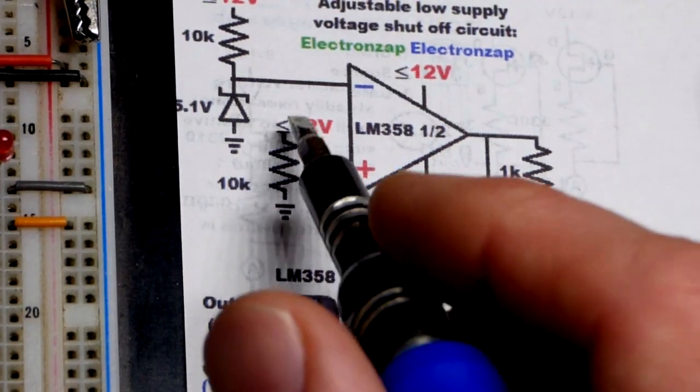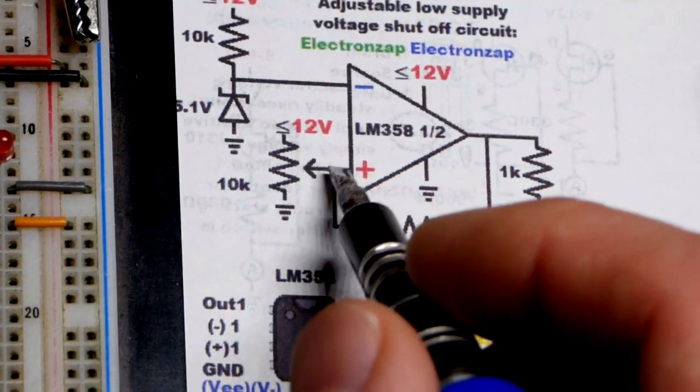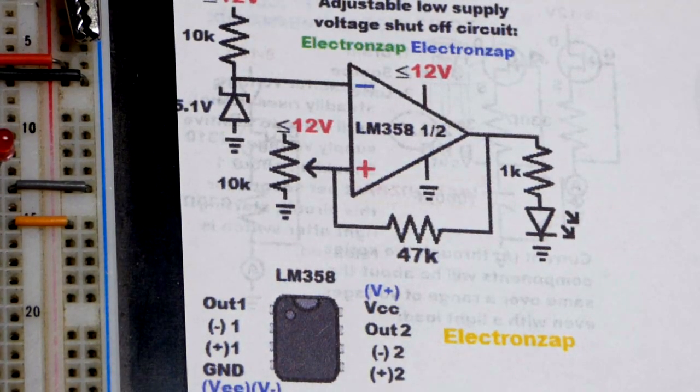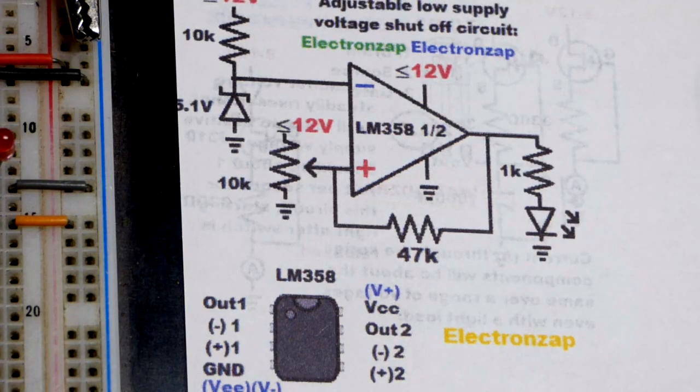And there you can see the symbol. It's a resistor, voltage across it, and then a wiper that taps into it because we're using it as a voltage divider. So yeah, that pretty much explains everything.